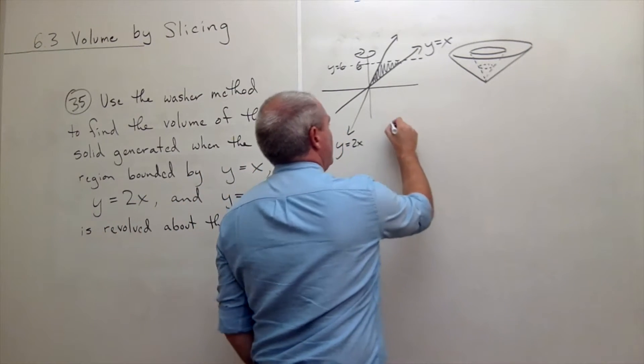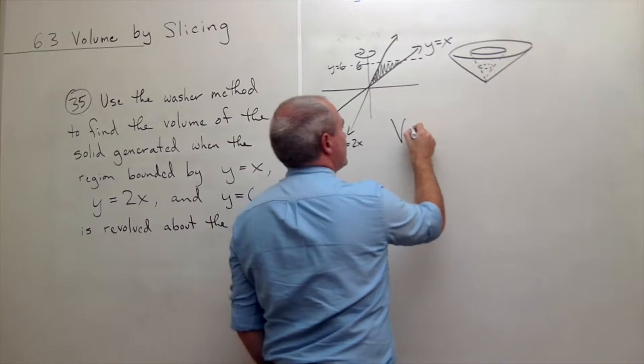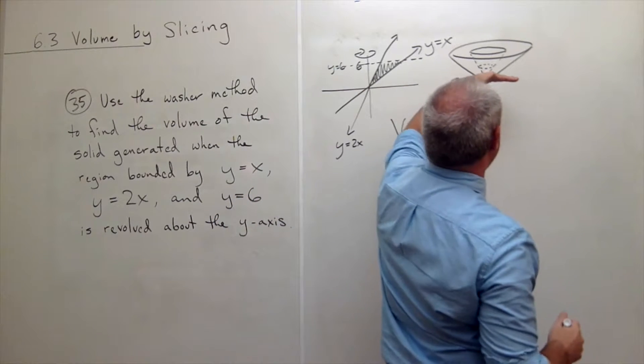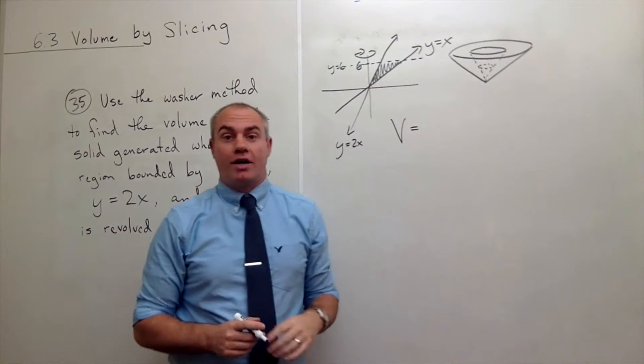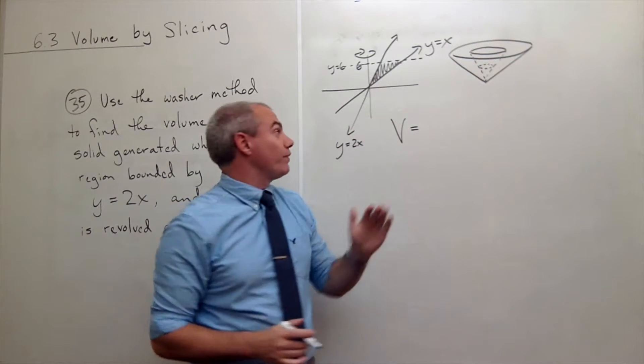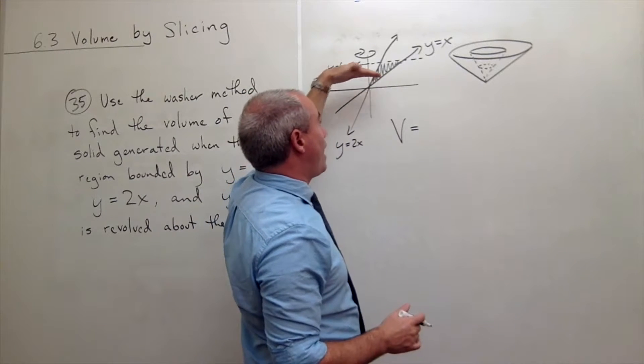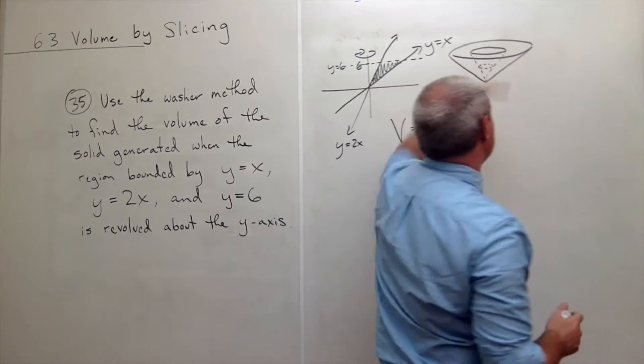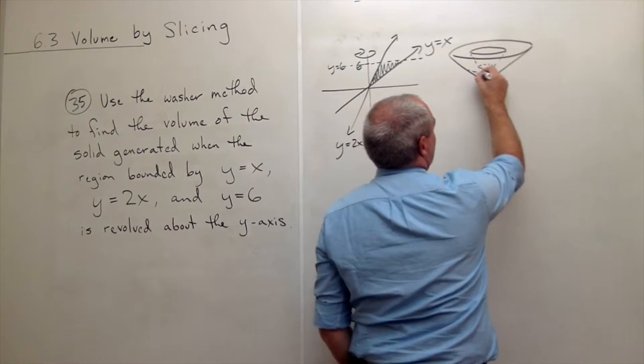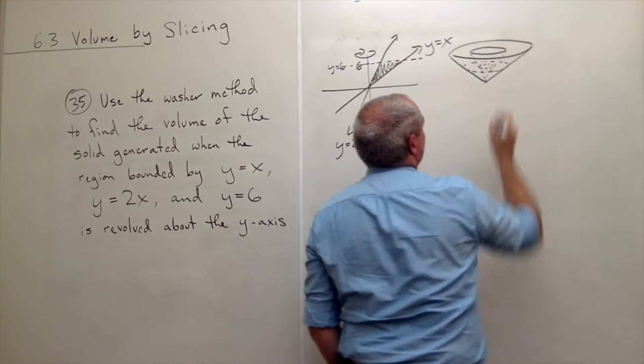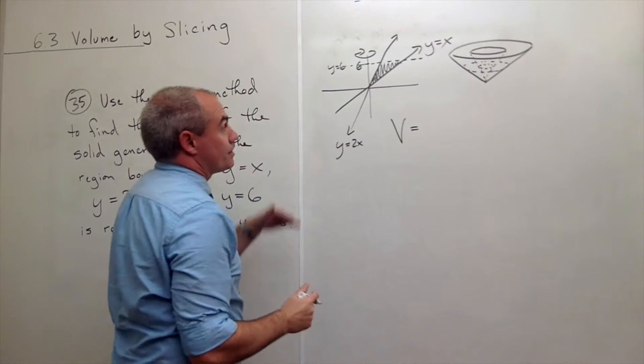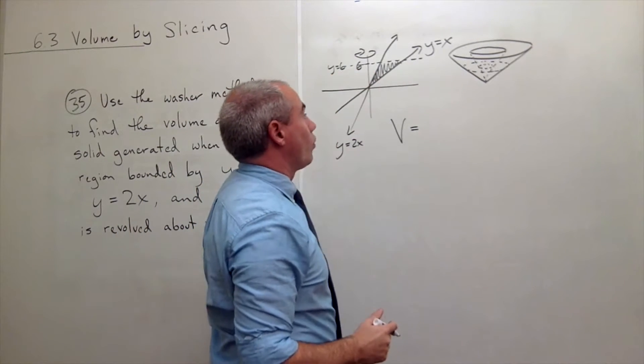Well, let's set it up. You can see right now that if I took any cut in the y direction, this thing would be a washer. Not in the x direction. We've got to be cutting up the y-axis to see these washers. And you can see a washer right here. This little washer is perpendicular to the y-axis.